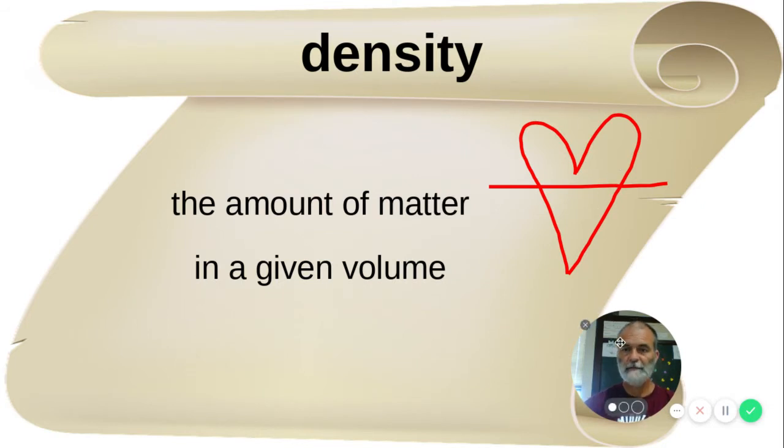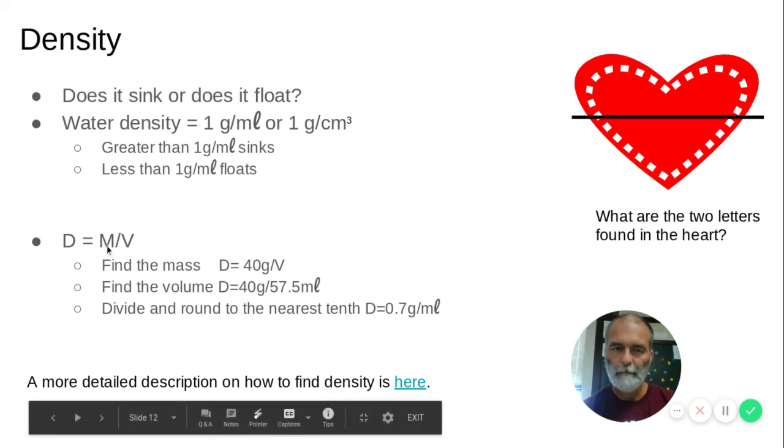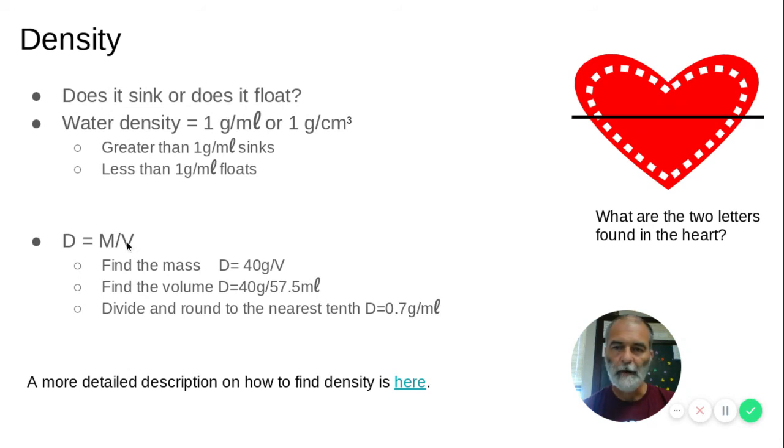So the last one we come to then is something called density. And I always say that I love density. And the reason I love density, if you look at that very carefully, what's on top and what's on the bottom? On the top, we have mass, an M. And on the bottom, we have volume, which is a V.